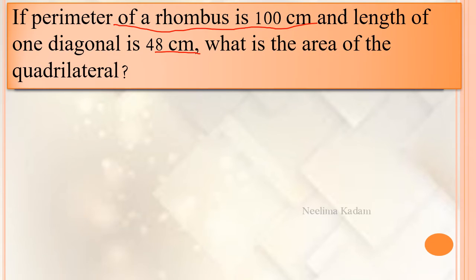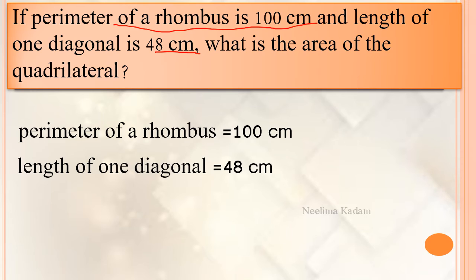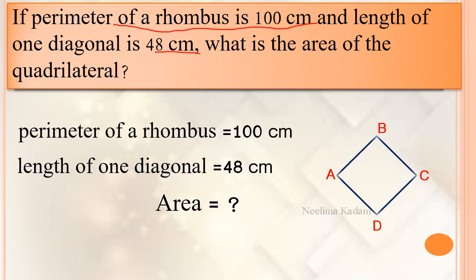Example 2: If the perimeter of a rhombus is 100 cm and the length of one diagonal is 48 cm, what is the area of the quadrilateral? Write down whatever is given first. Perimeter of a rhombus is 100 cm, length of one diagonal is 48 cm. Find the area.